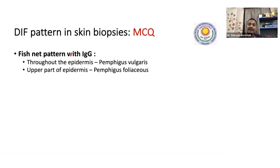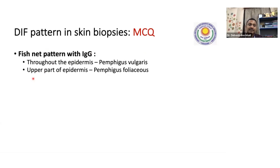If you have antibodies against Dsg-3 — which is distributed throughout the epidermis — you get a fishnet pattern throughout the epidermis: that is pemphigus vulgaris. If the fishnet pattern is in the upper part of the epidermis only, that is pemphigus foliaceus, where you have antibody against Dsg-1. In pemphigus vulgaris, antibodies are against both Dsg-1 and Dsg-3; in pemphigus foliaceus, only Dsg-1. That is why in pemphigus foliaceus the splitting is subcorneal, just below the corneal layer; whereas in pemphigus vulgaris the splitting is suprabasal.